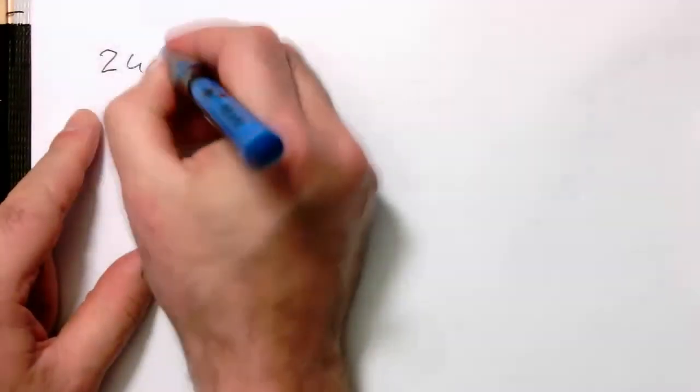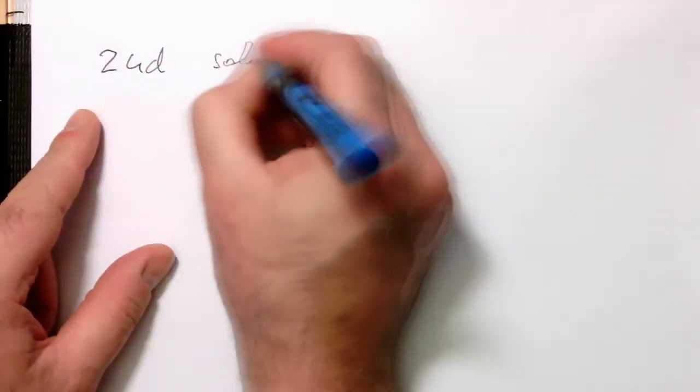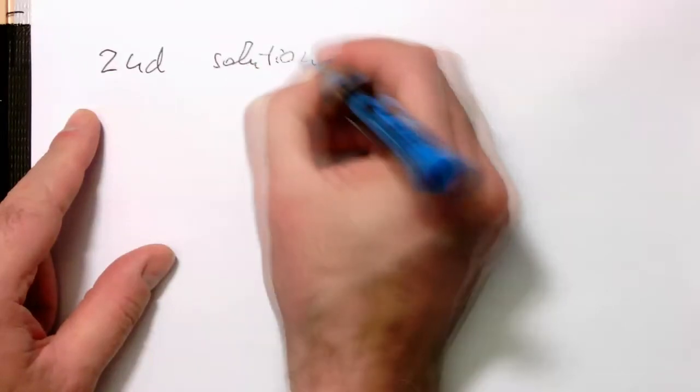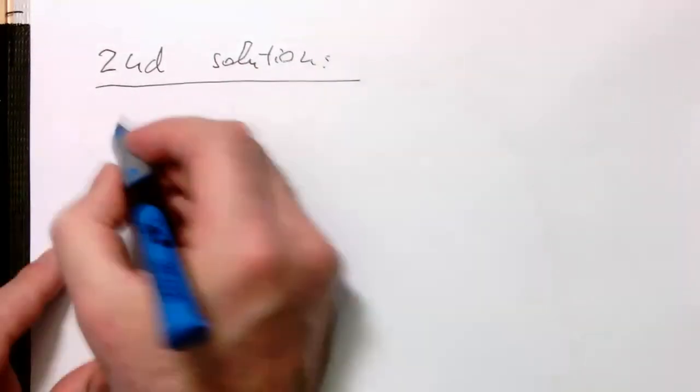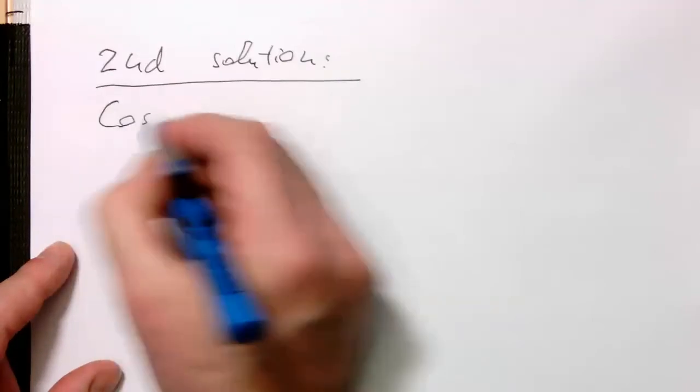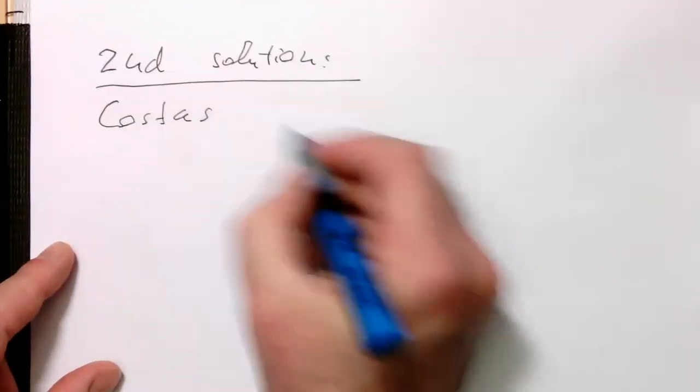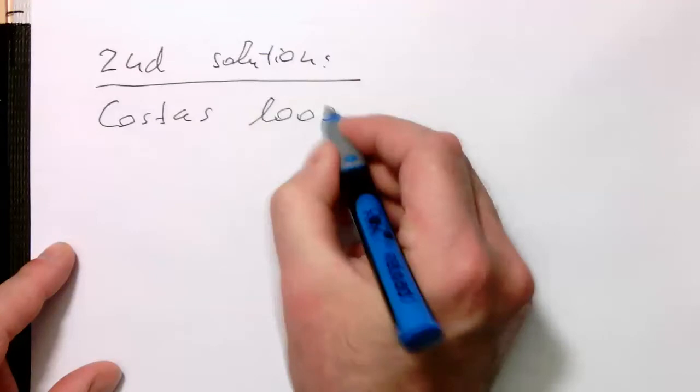Solution number two is a so-called Costa's loop. Here I mean the traditional Costa's loop, the one which has been presented in the 50s already.